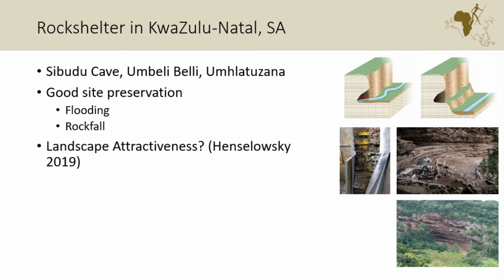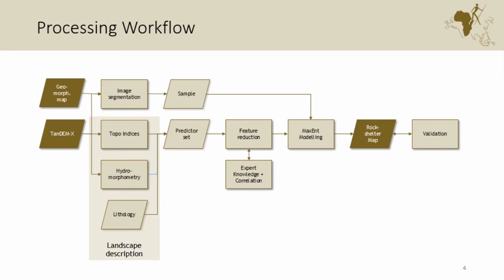We used a fairly typical machine learning workflow. First, we needed a sample — we did a geomorphological map of the area surrounding Sibutu and extracted the attributes of the mapped rock shelters. We included topographic indices, hydromorphological and lithological information, put that into a predictor set, then did feature reduction based mainly on expert knowledge and statistical correlation to identify the factors most important for these sites.